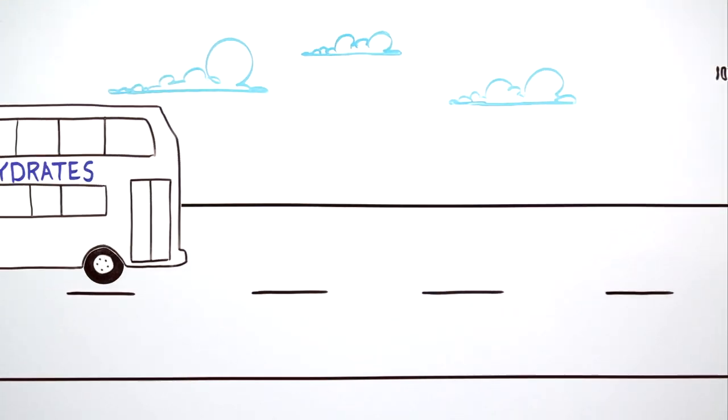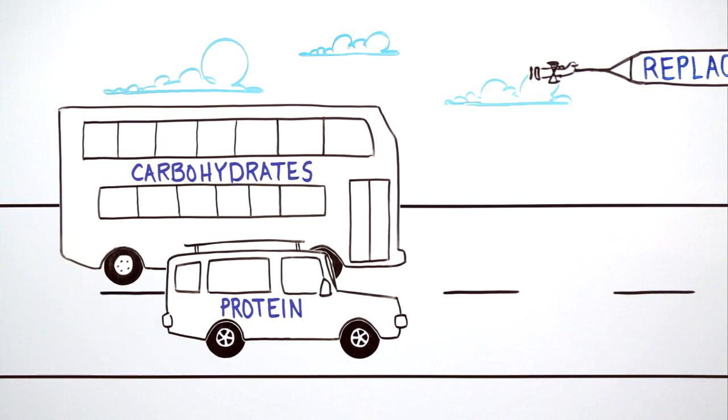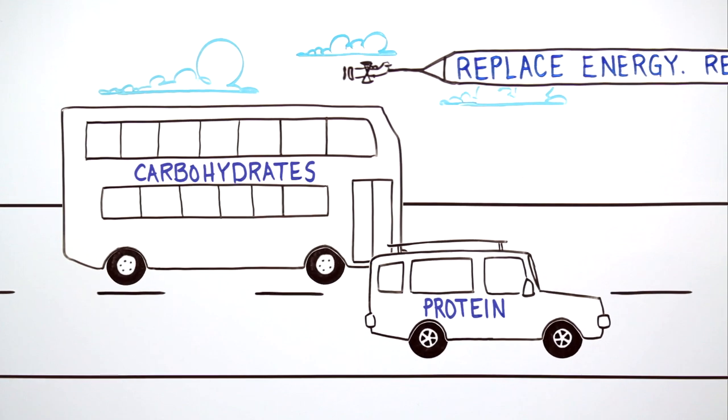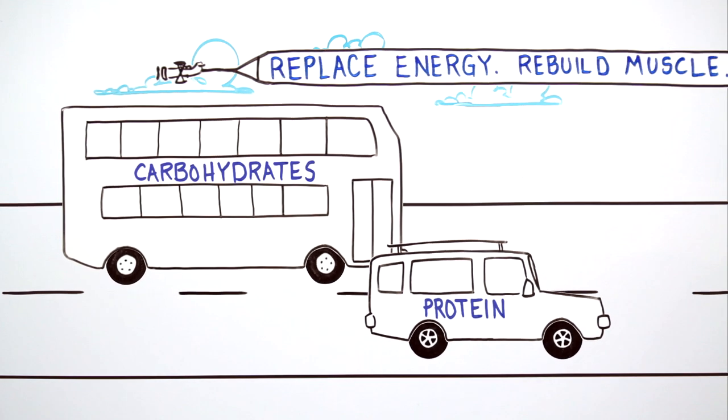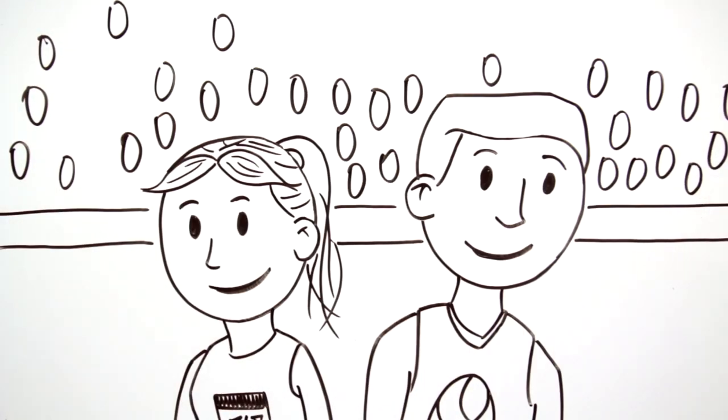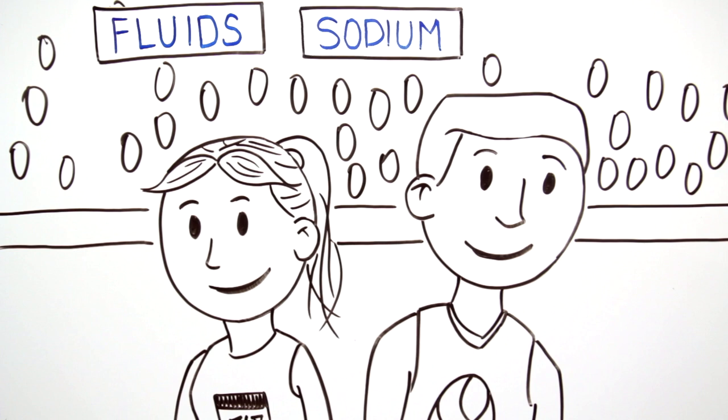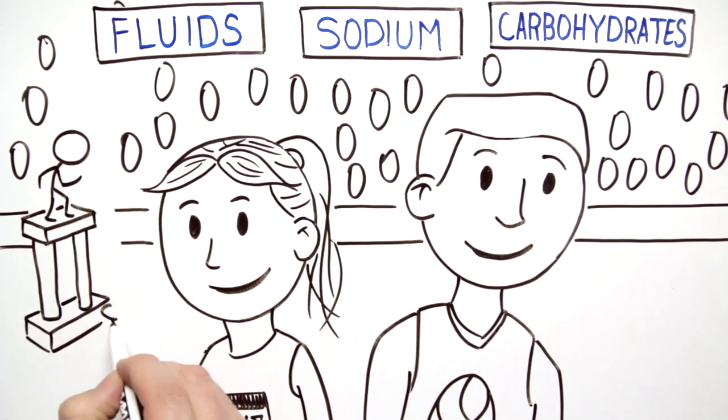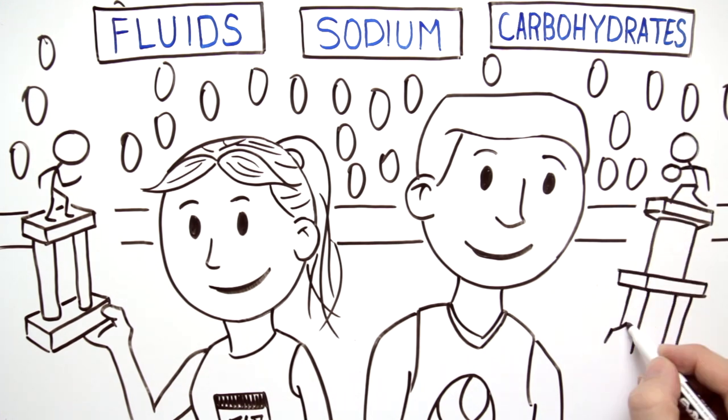After exercise is also a good time to consume additional carbohydrates and protein to help replace energy stores and rebuild muscles. By adopting a smart fluid replacement strategy that includes adequate fluids, sodium and the right types and amount of carbohydrates, athletes can minimize fatigue and maintain peak performance.